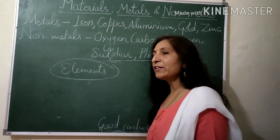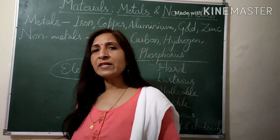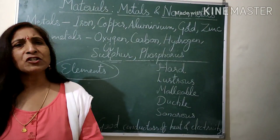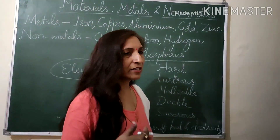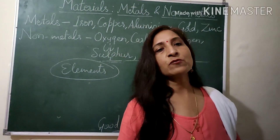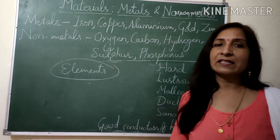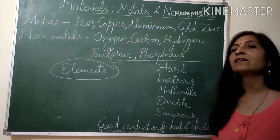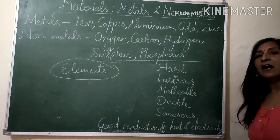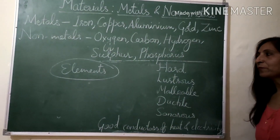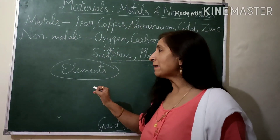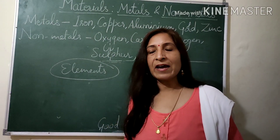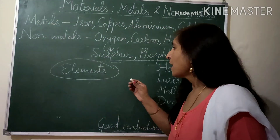There are 92 natural elements. 90 are appreciably found in nature, and there are some more elements which have been prepared by scientists in the labs artificially. Everything is made up of elements.